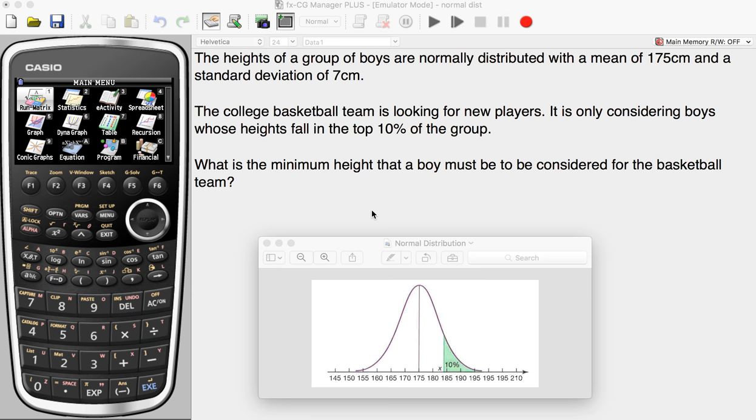Here's our situation. The heights of a group of boys are normally distributed with a mean of 175 cm and a standard deviation of 7 cm.